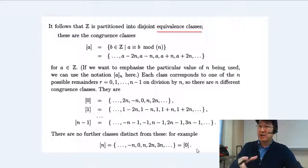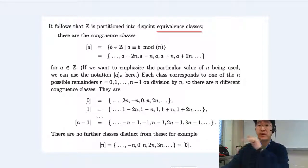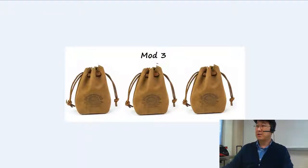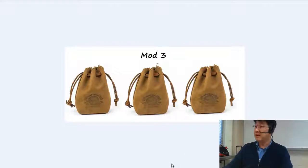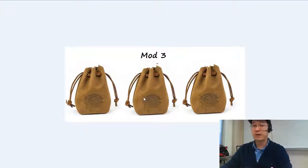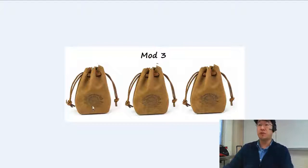One leap you have to make at this stage is the following. From my experience, students sometimes have difficulty making this transition — you're entering a new abstract world. For N equals 3, think of three bags. You don't know what's in each bag. But if zero is in one, you know everything else: 3 is in there, negative 3 is in there, 9 is in there, 33 is in there — all multiples of 3.